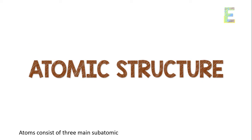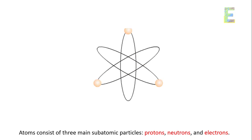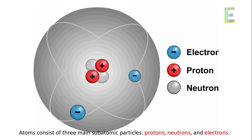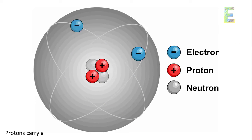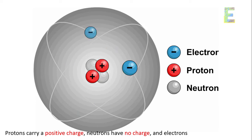Atomic structure: atoms consist of three main subatomic particles, protons, neutrons, and electrons. Protons carry a positive charge, neutrons have no charge, and electrons are negatively charged.